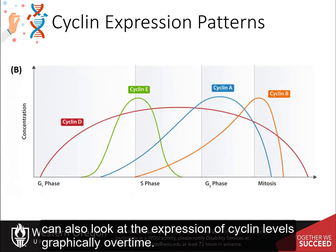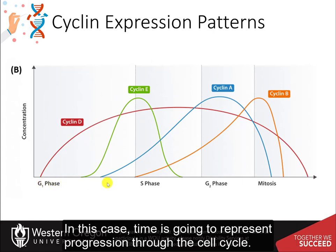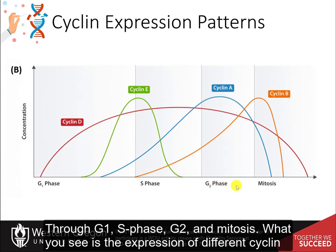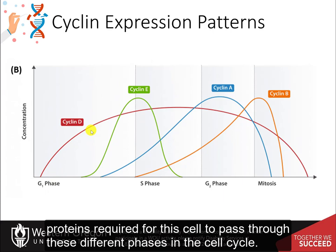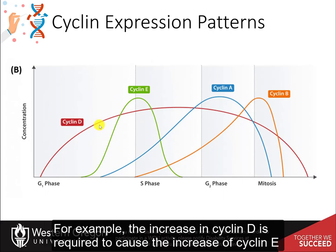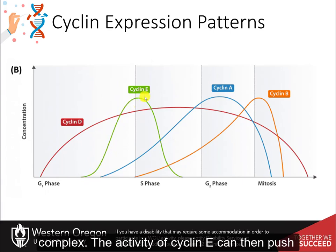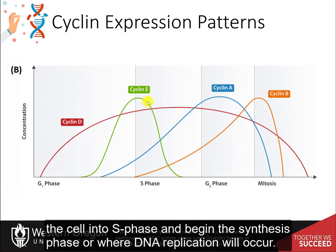We can also look at the expression of cyclin levels graphically over time, where time represents progression through the cell cycle through G1, S phase, G2, and mitosis. The expression of different cyclin proteins is required for the cell to pass through these different phases. For example, the increase in cyclin-D is required to drive the increase of the cyclin-E complex, and the activity of cyclin-E can then push the cell into S phase, where DNA replication will occur.